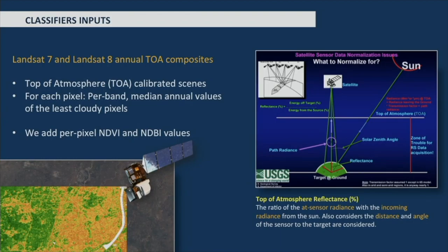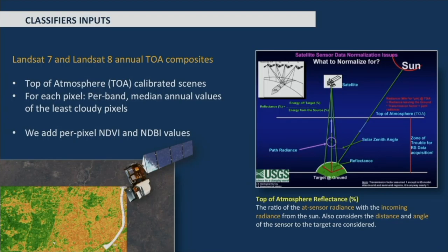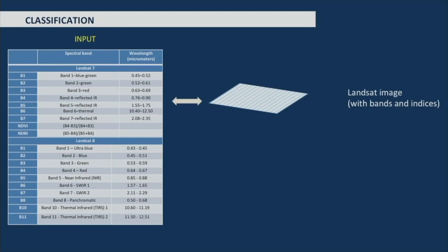As classifier inputs, we used Landsat 7 and Landsat 8 calibrated scenes. For each pixel, we calculated per-band median annual values of the least cloudy pixels — taking the full stack of Landsat images for the year, removing scenes with cloud coverage above 10%, and computing the median value per band. In addition, we added per-pixel NDVI and NDBI. NDVI is an index for vegetation, and NDBI is another index for built-up areas. So for each pixel we have all spectral bands plus these calculated indices as features, and the labels — built-up or not built-up — as outputs.